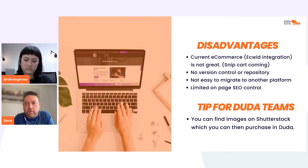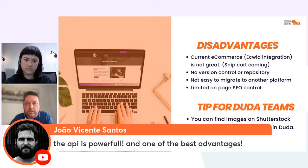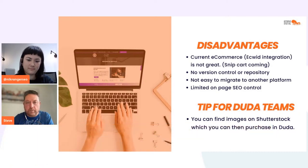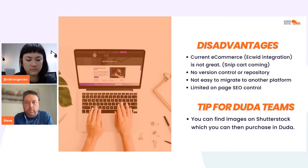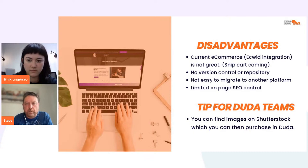Disadvantages: the e-commerce integration currently is with Ecwid and it's just not great. Snipcart is coming soon — I believe it's just a few months away from the first release, and we're currently predominantly using Shopify unfortunately. There's no version control or repository — you can go back to a backup or a previous change, but the code and content aren't versioned in a really good flow. That's something they're working on and hopefully it'll change.